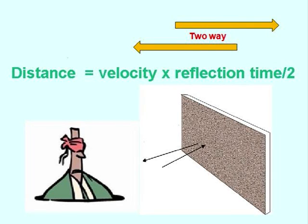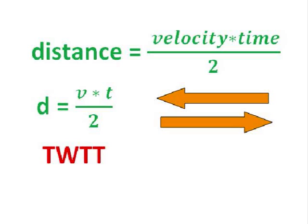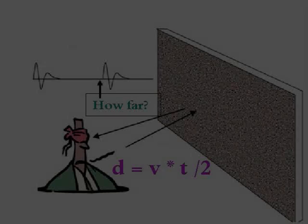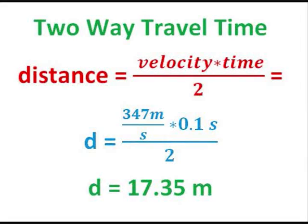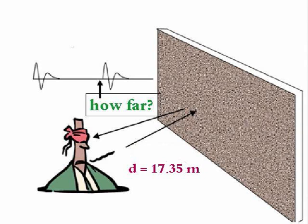The blindfolded geoscientist figures how far away the wall is. Remember, he measures the time it took for the sound wave to travel to the wall and back. If he only wants to measure the time it took for the sound wave to travel just to the wall, then he must divide the travel time by 2. Therefore, putting his numbers into the formula, he writes, d equals velocity times time divided by 2 equals 347 meters per second times 0.1 second divided by 2 equals 17.35 meters. The blindfolded geoscientist now knows he is 17.35 meters from the wall.